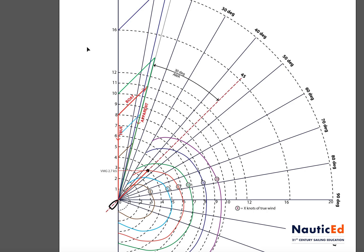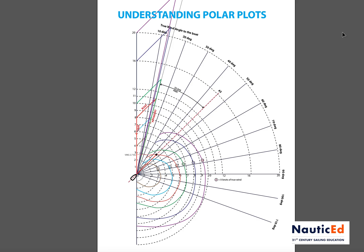Once you get up to the 16-knot triangle, things start to change a little bit because the boat can't go as fast — there's too much drag in the water — so the apparent wind is actually going to bear off a little bit. At the 20-knot wind triangle, it's even further off. At 20 knots, your apparent wind is going to be maybe 33 or 34 degrees just to hold your best course.